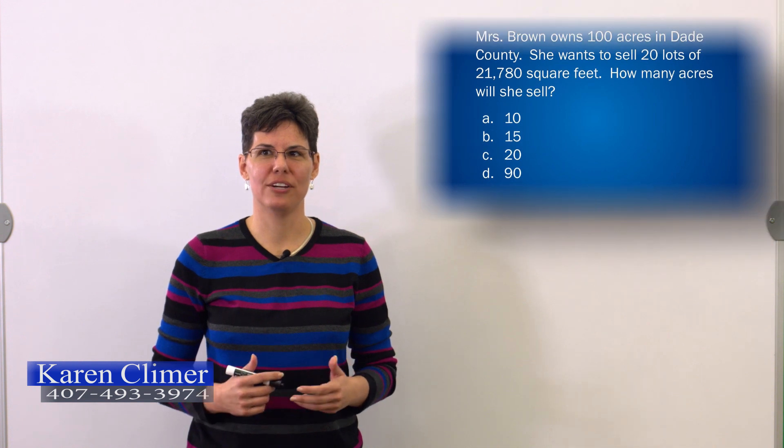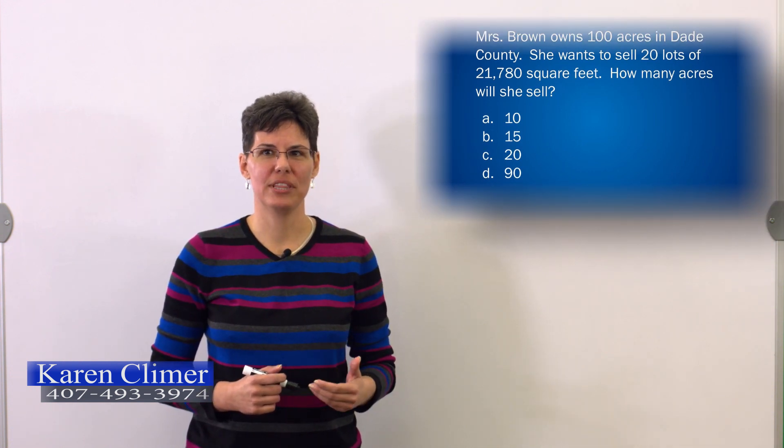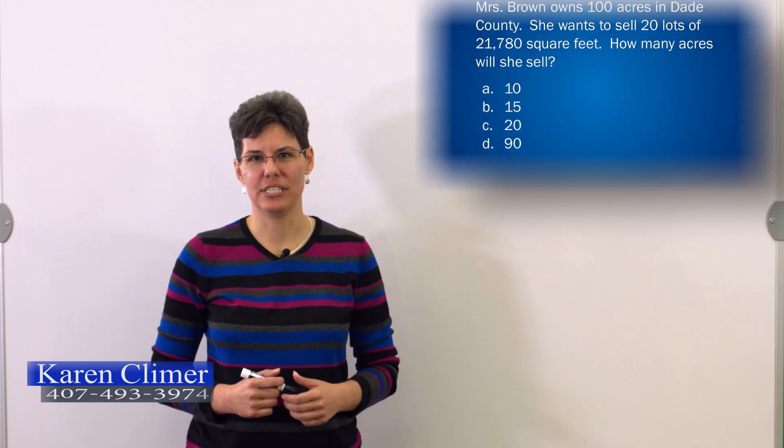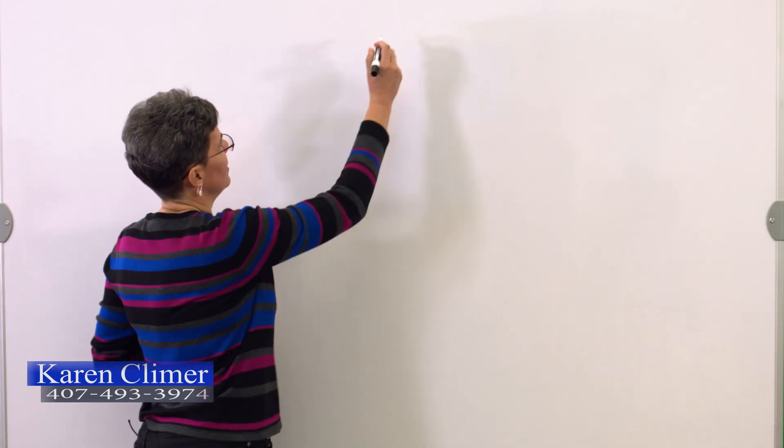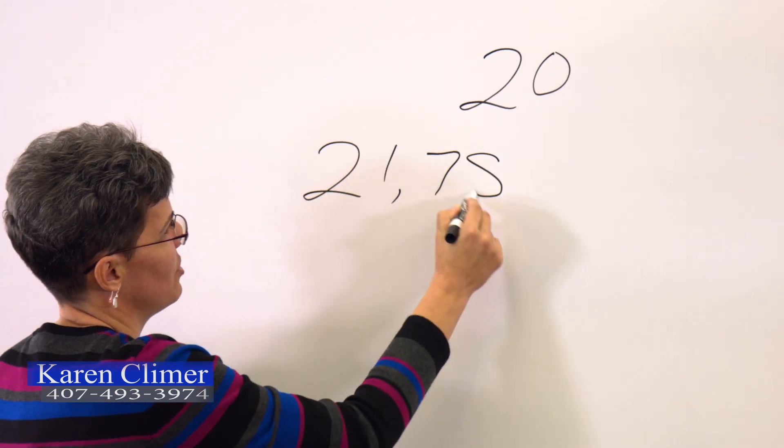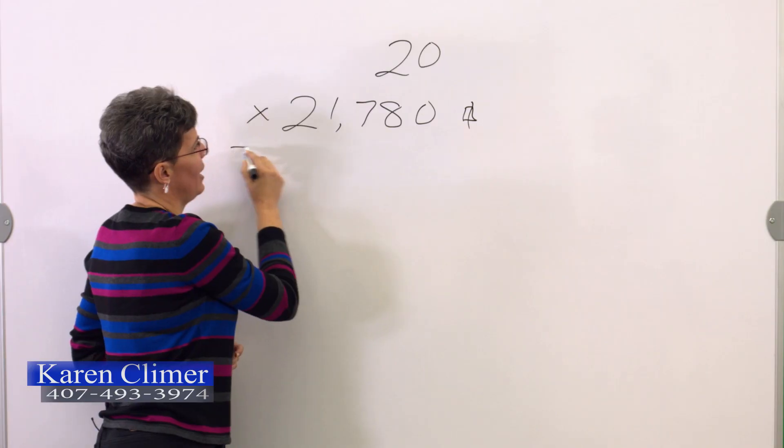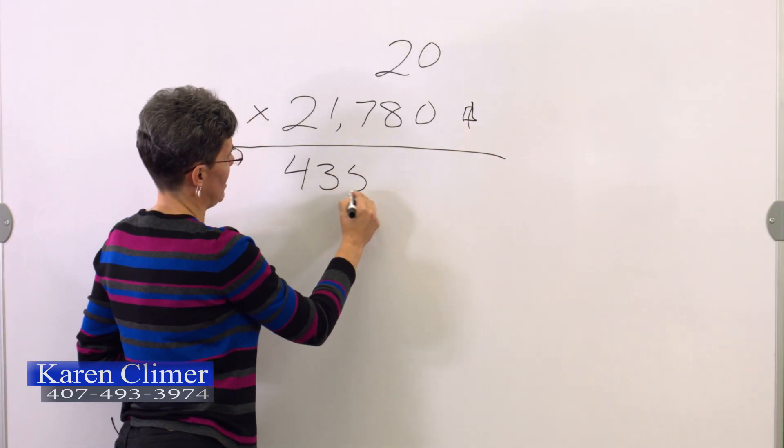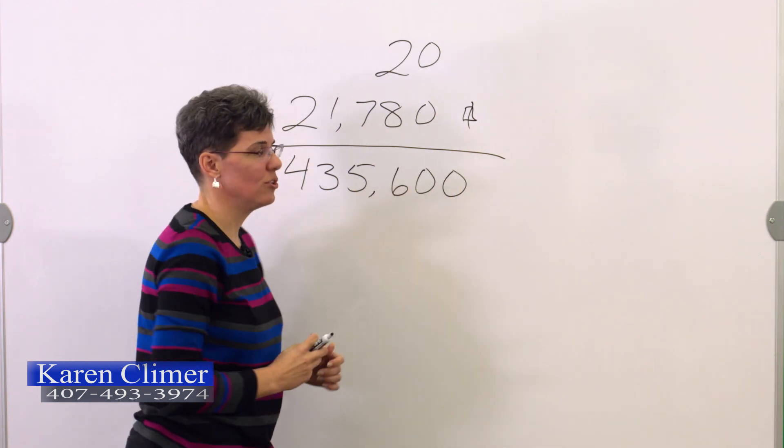Mrs. Brown owned 100 acres in Dade County. She wants to sell 20 lots of 21,780 square feet. How many acres will she sell? So we have 20 lots of 21,780 square feet. We're going to multiply that and we get 435,600 square feet.